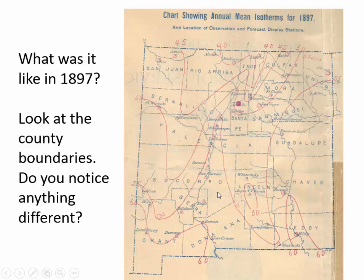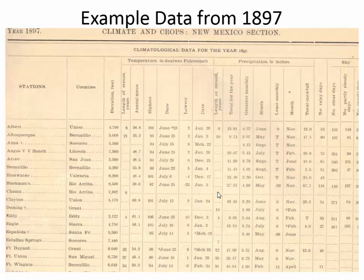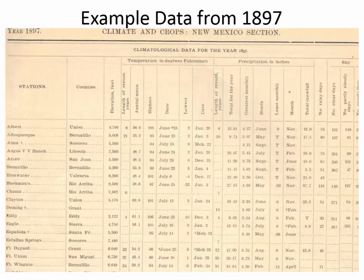So what about individual stations? In 1897 there were a number of stations. We can see station names, counties, elevations, temperatures, and precipitation. There's a column called 'length of record in years.' Even in 1897, there were 21 years of weather data collected in Albuquerque. If you go back into the forts — which is probably the most common place to find long records — Fort Bayard had more than 22 years of data, Fort Union had 37 years, and Fort Wingate had 34 years of data in 1897.